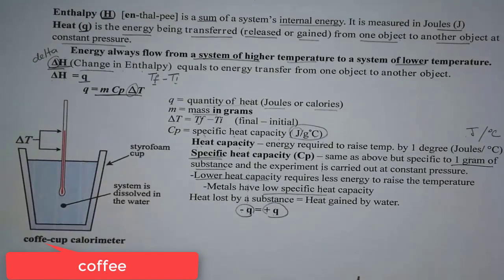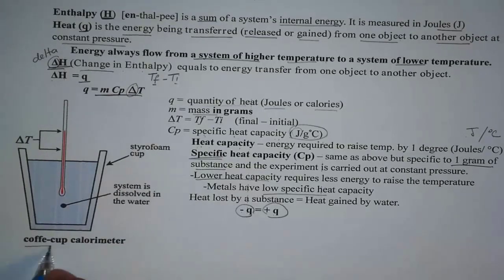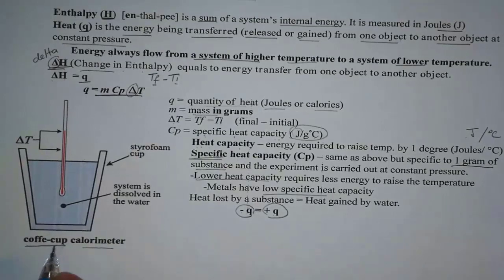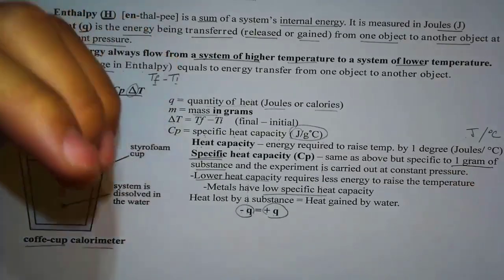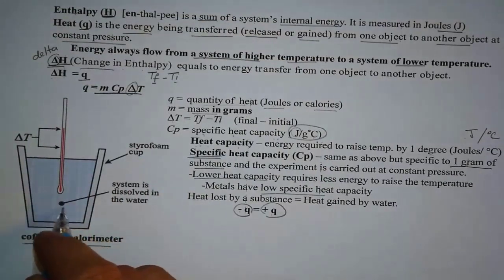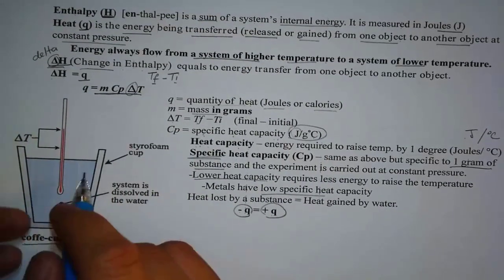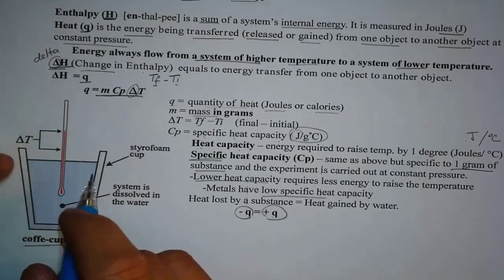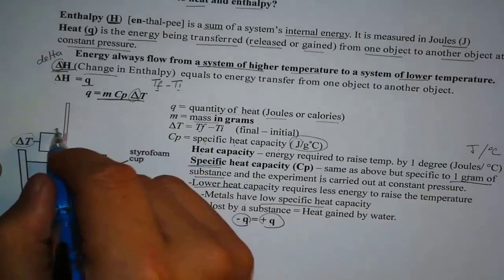And one of the most common equipment that we use to determine how much energy is being released is a coffee cup calorimeter. Think of the word coffee. We use a coffee cup. And a coffee cup, if you haven't held a coffee cup before, it is very well insulated. So that means all the heat that has been released by the system in this container, it will be changing the temperature.